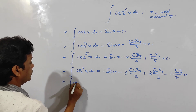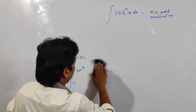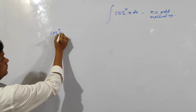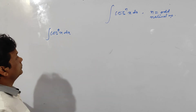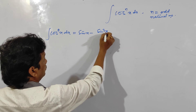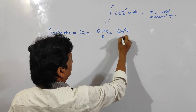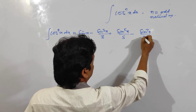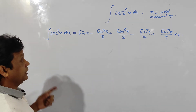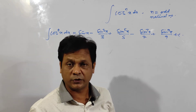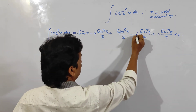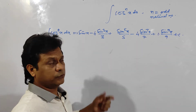Similarly, for integration of cos^9 x dx, it will be sin x minus sin cube x by 3 plus sin^5 x by 5 minus sin^7 x by 7 plus sin^9 x by 9 plus c. There are 5 terms, so 5 minus 1 is 4. Using 4C0 = 1, 4C1 = 4, 4C2 = 6, the coefficients are 1, 4, 6, 4, 1, and your problem is completed.